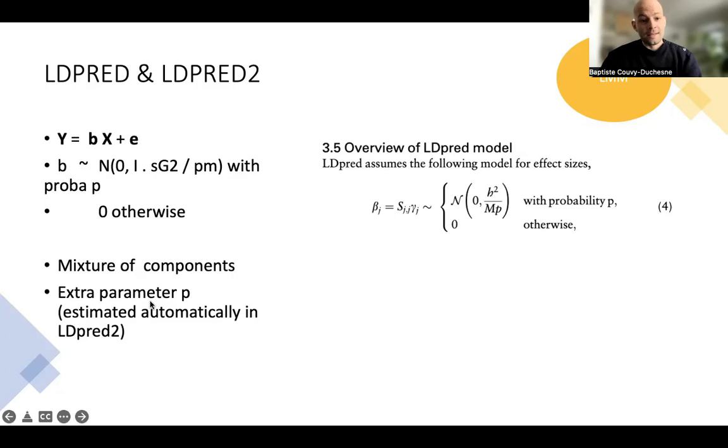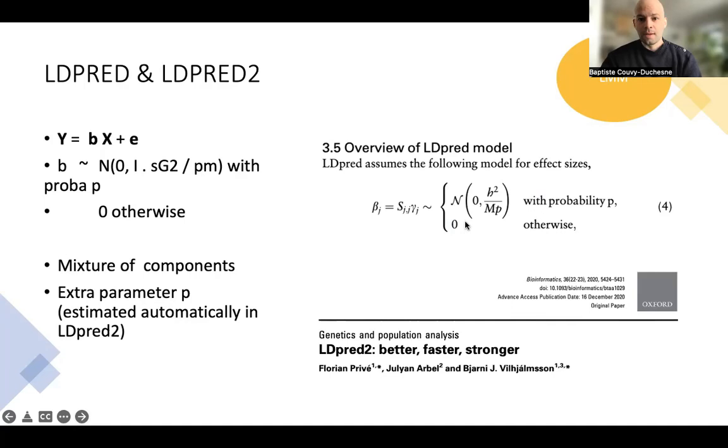As you can see here, there's an extra parameter p which needs to be estimated and is now estimated automatically in LD-PRED2, but was not in LD-PRED. So this is what the actual paper, how they write the distribution, so you see it's very close to what they had before, except that there's this zero for a certain number of SNPs. You can find all of this in this LD-PRED2 paper.